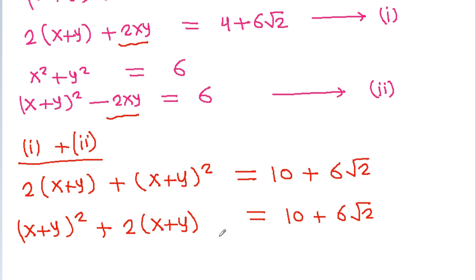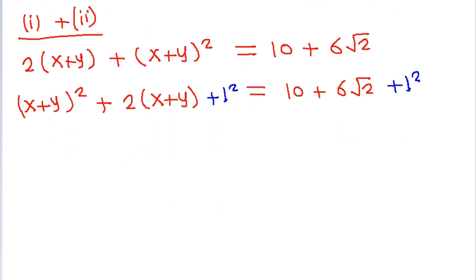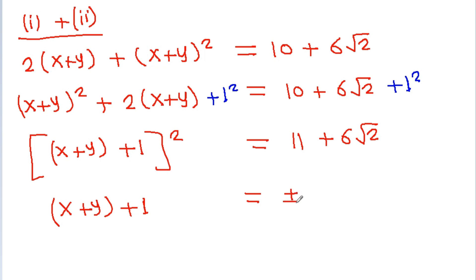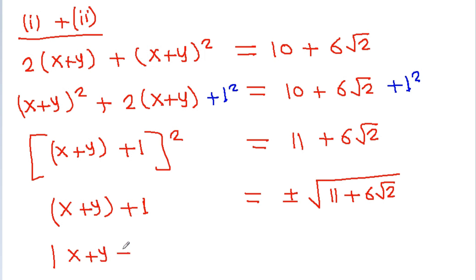If we add 1 square to both sides, then this will be equal to x plus y plus 1 whole square, which is equal to 10 plus 1 is 11 plus 6 root 2. And x plus y plus 1 will be equal to plus or minus square root of 11 plus 6 root 2. So mod of x plus y plus 1 will be equal to mod of plus or minus square root of 11 plus 6 root 2.